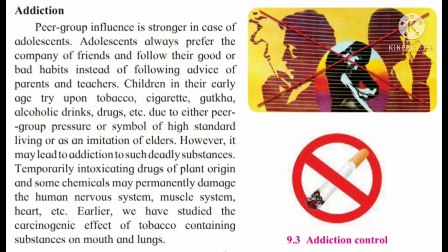Children in their early age try tobacco, cigarettes, alcoholic drinks, and drugs. Due to either peer group pressure, or as a symbol of high standard living, or as an imitation of elders, addiction takes place. The carcinogenic effect of tobacco-containing substances on the mouth and lungs means that peer group members can suffer from cancer. That is why addiction is a very important factor affecting social health.